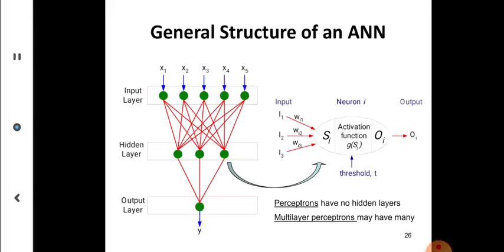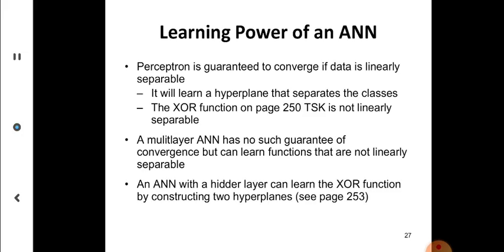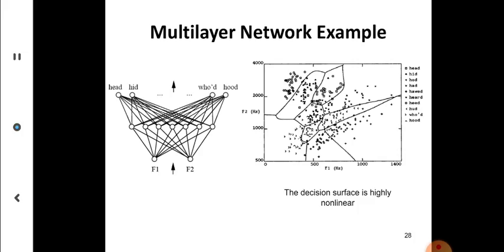From the input layer, inputs are coming and these inputs are all weighted, getting added, and coming into another layer called the hidden layer. There is a threshold, and then from the hidden layer all outputs go to the output function. Perceptrons have no hidden layer. Multilayer perceptrons may have many hidden layers. Perceptron is guaranteed to converge, but a multilayer neural network has no guarantee of convergence because sometimes it is learning but it may not stop.